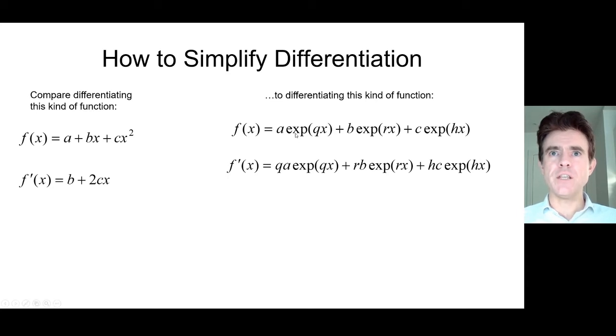To differentiate e^(qx), the e^(qx) stays the same, and we just bring down the coefficient of the argument of the exponential. So the q just goes into the front there. The same is true for the other expressions - the exponential stays the same, and the coefficient goes down in front.